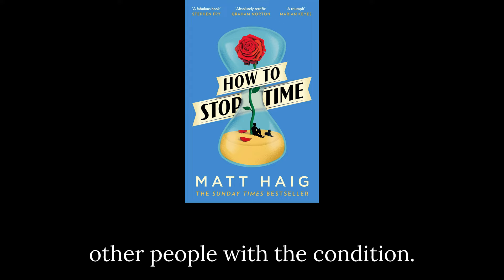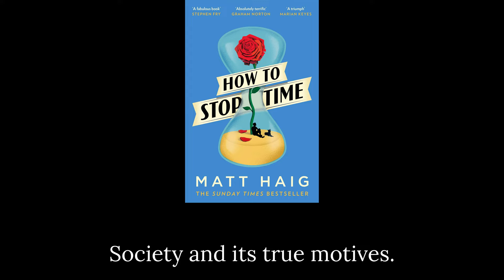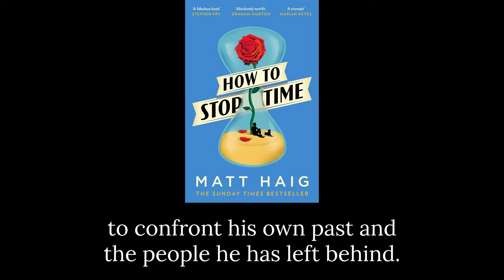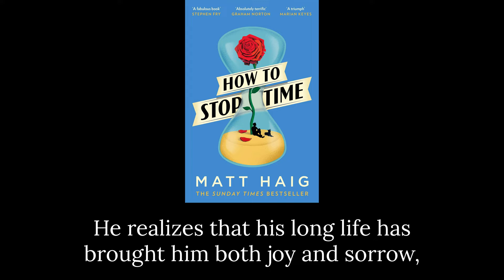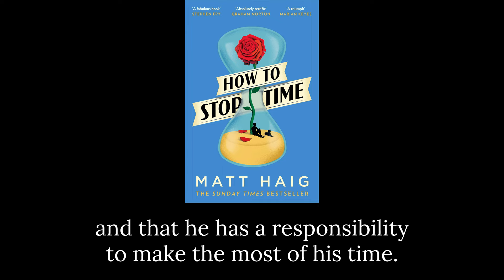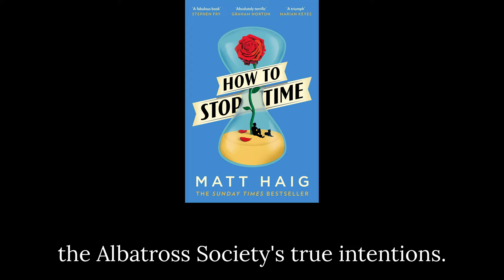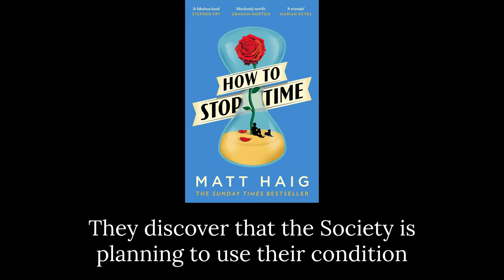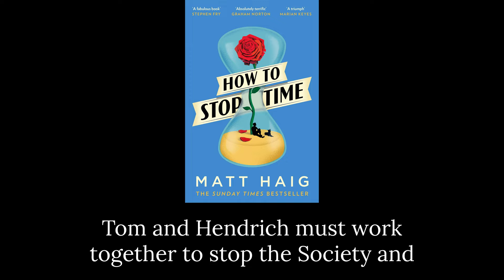Along the way, Tom learns more about the Albatross Society and its true motives. As Tom travels the world with Hendritch, he also has to confront his own past and the people he has left behind. He realizes that his long life has brought him both joy and sorrow, and that he has a responsibility to make the most of his time. In the novel's climactic scene, Tom and Hendritch come face to face with the Albatross Society's true intentions. They discover that the society is planning to use their condition to create a new race of humans, which would have disastrous consequences for the world. Tom and Hendritch must work together to stop the society and save the world from destruction.